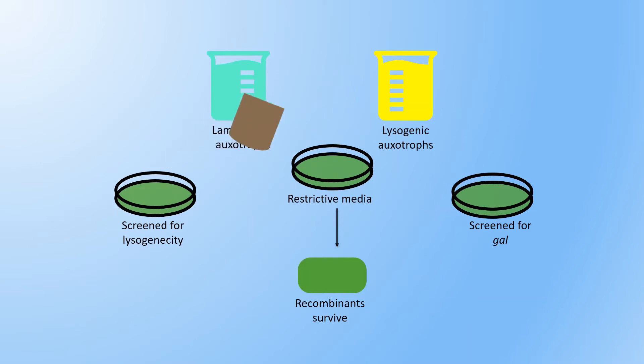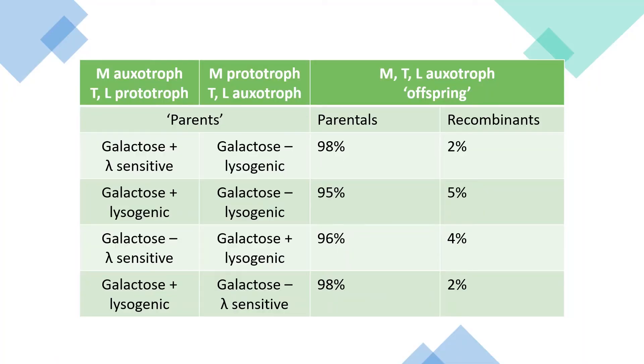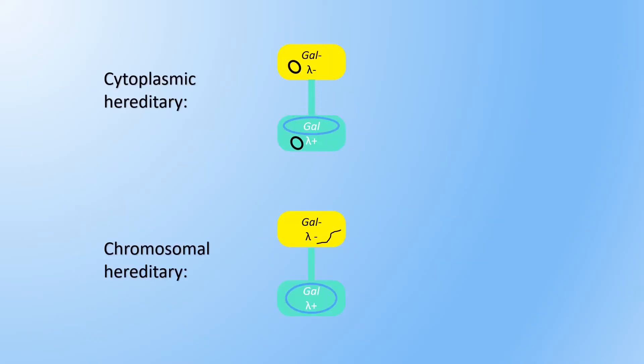The surviving offspring were then screened for lysogenicity and a known genetic trait called galactose auxotrophy. The extremely high frequency of parental types in the surviving colonies allowed the Lederbergs to conclude that the lambda phage was transmitted as a chromosomal factor with an integration point closely linked to the galactose operon. If lysogenicity had instead been a cytoplasmic factor, HFR recombination wouldn't have been expected to transfer the lysogenic trait, and recombination of gal and lysogenicity traits would have been expected.